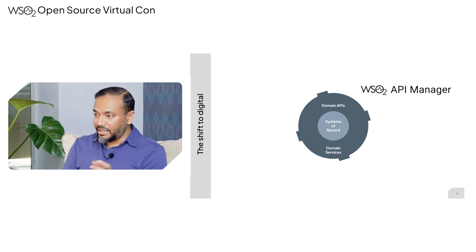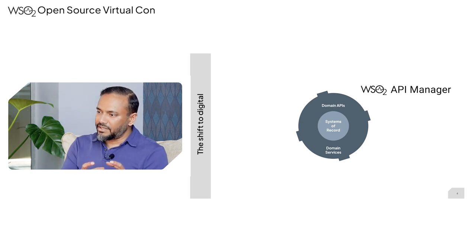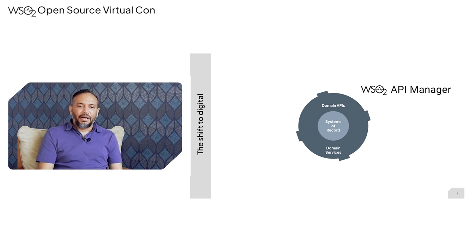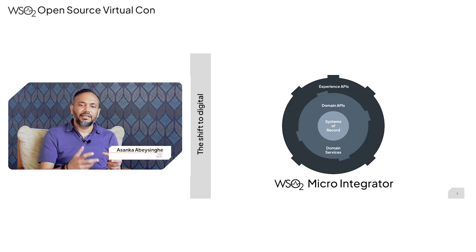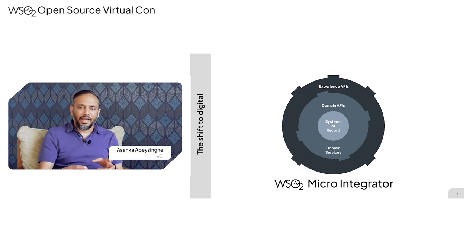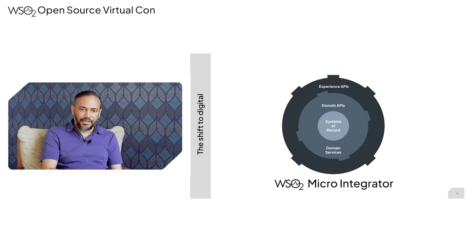Domain services enrich the core capability and domain APIs expose those capabilities as reachable functionality for the application. Once you do that, you can build the application. But how you build a domain API or domain service is a key question. If there's a way of accessing the core system you can directly call it, but you might have to augment the data or connect multiple systems, so you need integration capabilities to do that.